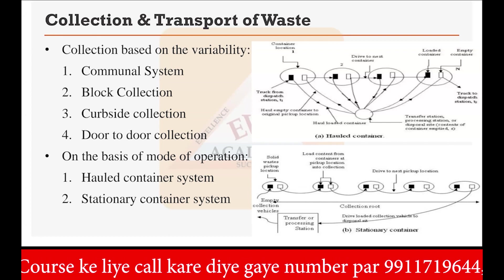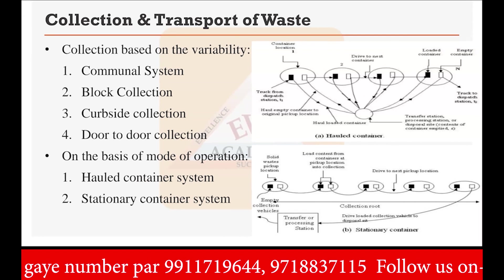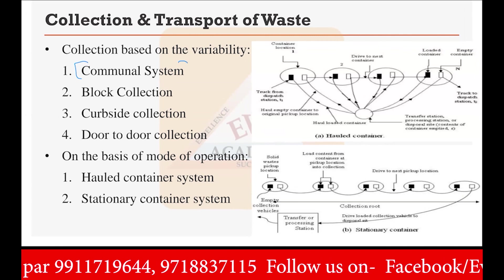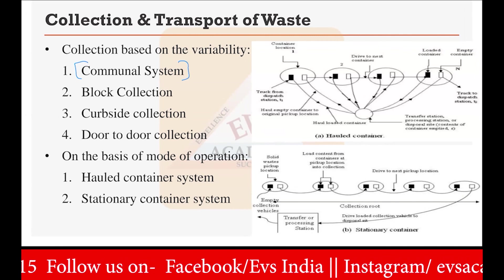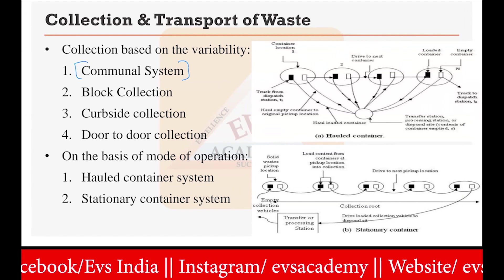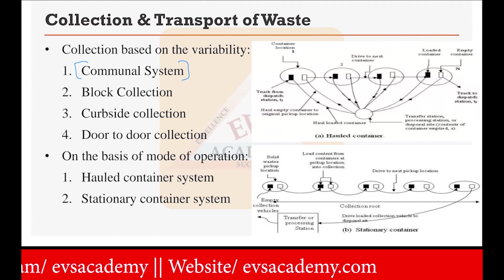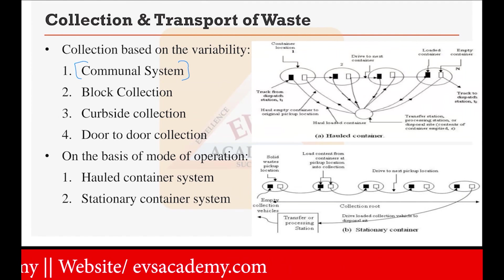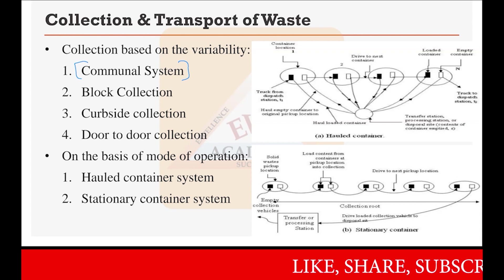According to the variability of the site, collections are divided into multiple categories. For example, the communal system — in the communal system, you are getting the waste from a particular society or community altogether, from a particular area altogether. So that is the communal system, where you are collecting waste from a large area.